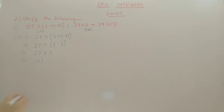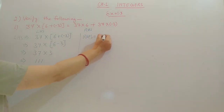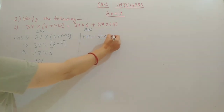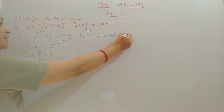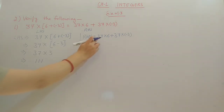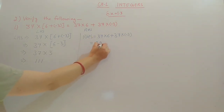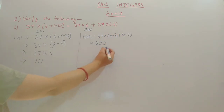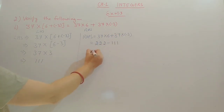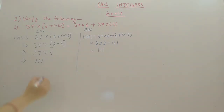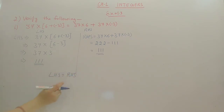Now we will calculate the right side: 37 into 6 plus 37 into minus 3. First, 37 into 6 is 222, and 37 into minus 3 is minus 111. So 222 minus 111 equals 111. Both left side and right side are coming the same, so left side equals right side. Hence, verified.